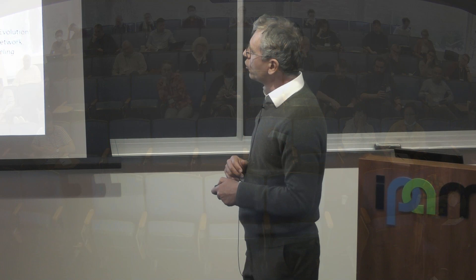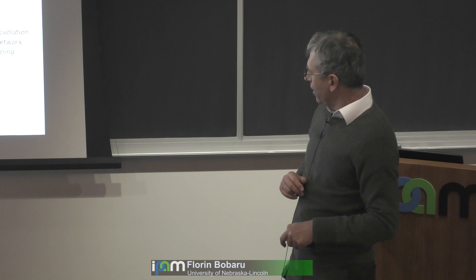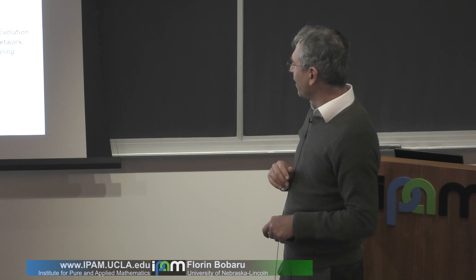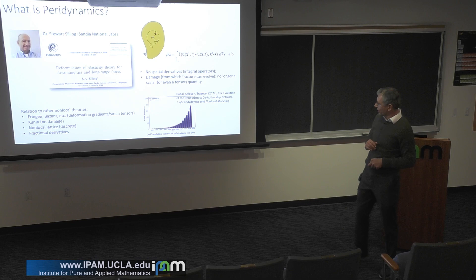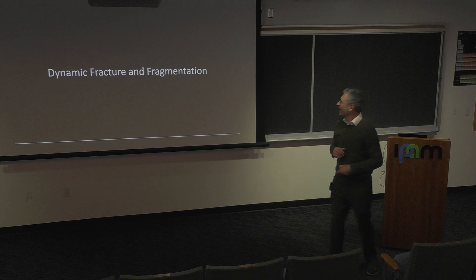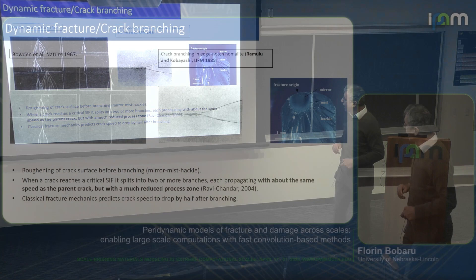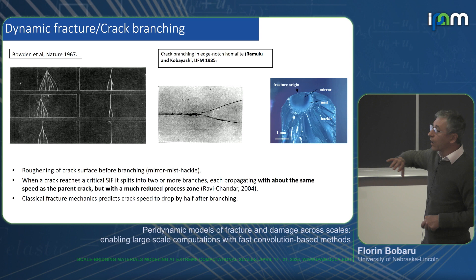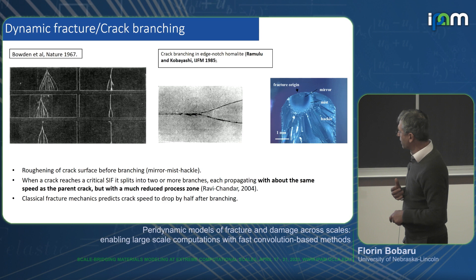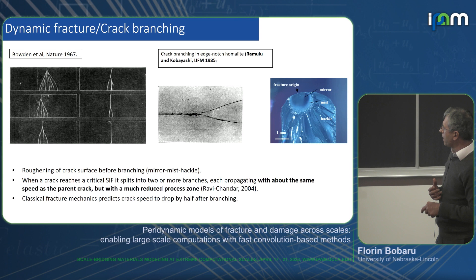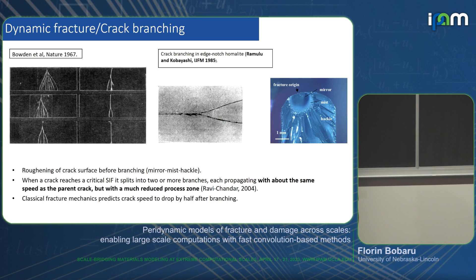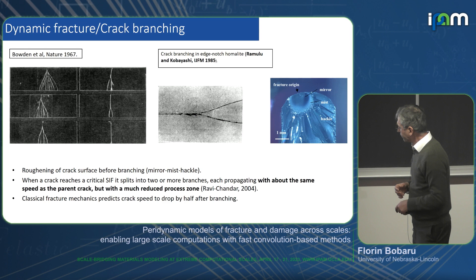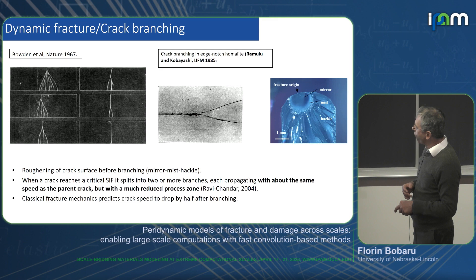The number of papers published on peridynamic topics has been growing — these authors counted up to 2019, and the trend continues. Starting with examples in dynamic fracture and fragmentation: experiments show that crack branching happens when a certain critical stress intensity factor is reached. After branching, the crack propagates at about the same velocity — there's no drop by half, which is what classical fracture theories predict. Just before fracture, you expand the process zone, which then reduces once it's branched.